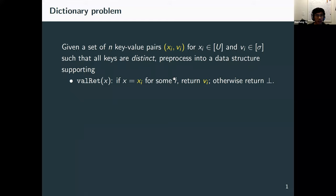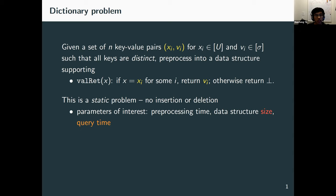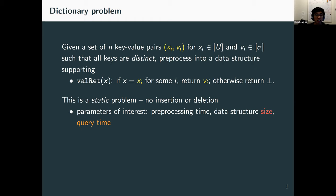So what is a dictionary? It's a basic data structure problem. We are given a set of n key-value pairs (x_i, v_i) where keys x_i come from a key space of size U, and values v_i from a value space of size sigma. All keys are distinct and we pre-process this set into a data structure supporting value retrieval queries. Given a query key x from U, we return the corresponding value v_i if x equals x_i for some i, and otherwise return that x is not in the input set. This is a static problem — there is no insertion or deletion; all queries are on the same set.